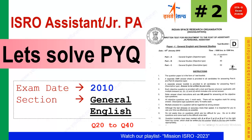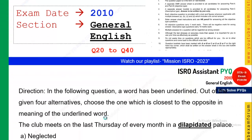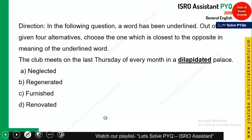Welcome to STAB Exam Forum. We have come up with another video on 'Let's Solve PYQ.' This video is for candidates preparing for ISRO Assistant UDC and Junior Personal Assistant. Today we will see the General English section from question number 20 to 40. In the earlier video we solved questions 1 to 20, so if you haven't watched that, have a look. Let's begin the session without any delay.